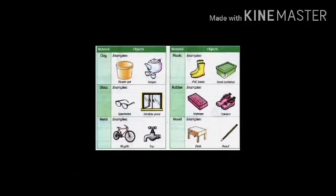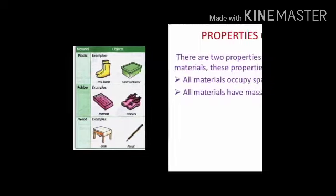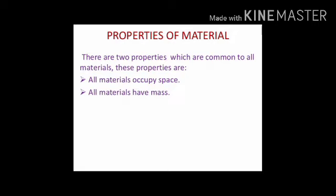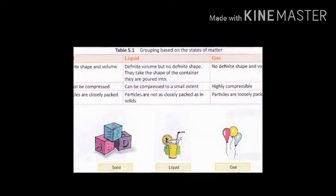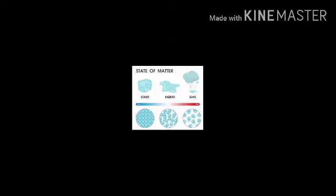एक ही material से हम बहुत सारी चीज़े बना सकते हैं — जैसे clay से flower pot भी बना सकते हैं और tea pot भी; glass से spectacles बनते हैं और window पेन भी; metal से bicycle और tap; plastic से बहुत सारे products। सभी materials space occupy करते हैं और सबका definite mass होता है। States of matter तीन हैं: solid — जिसमें definite shape और volume होता है; liquid — जिसमें definite volume होता है पर definite shape नहीं, वो container का shape ले लेता है; और gas — जिसमें ना definite shape होती है ना definite volume।